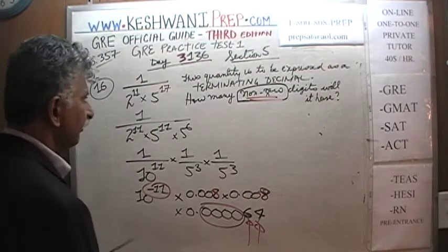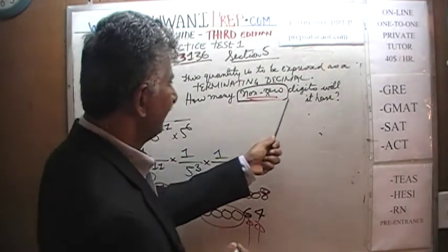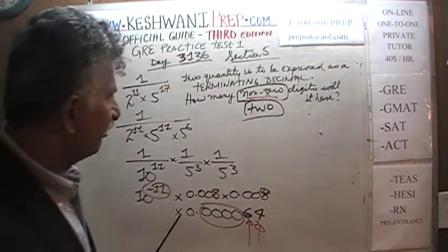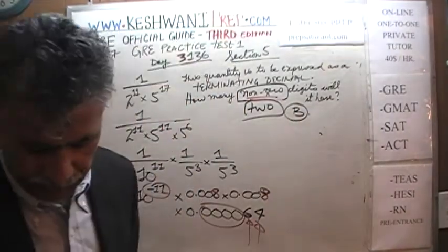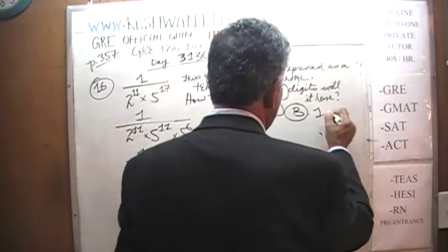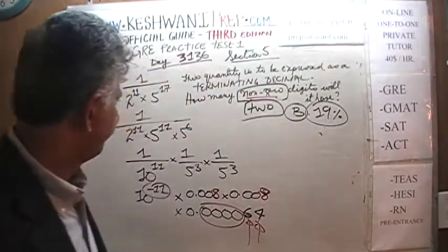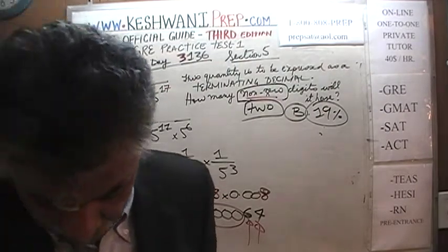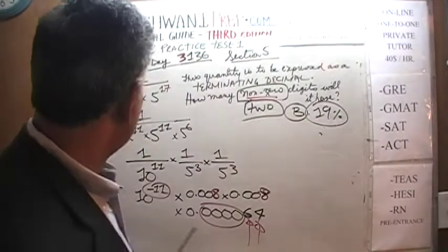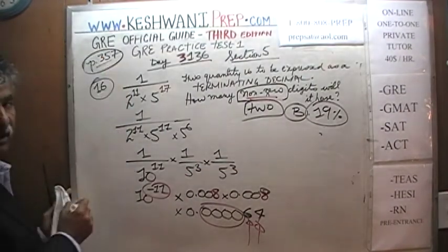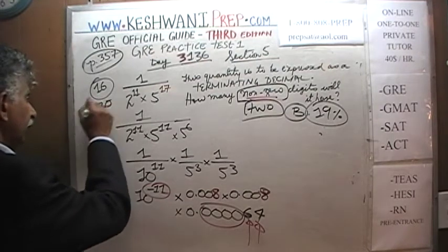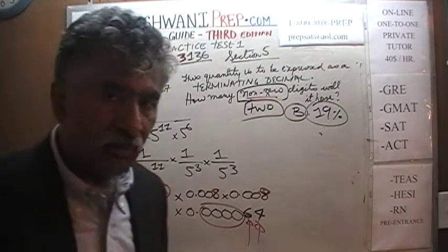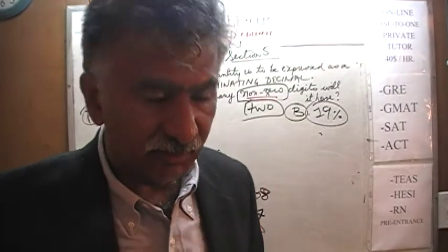There are only 2 non-zero digits. How many non-zero digits will it have? The answer is only 2 non-zero digits. The answer is B. It will have only 2 non-zero digits, and the percentile for this problem is 19%.